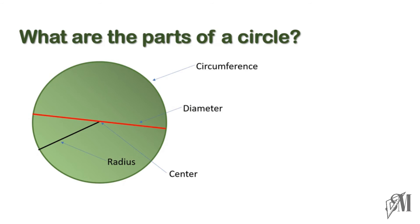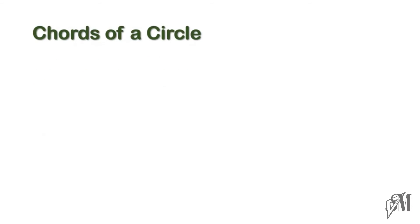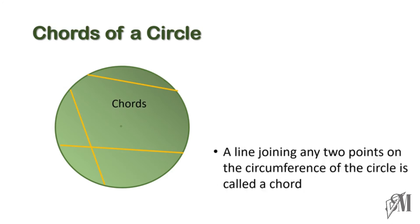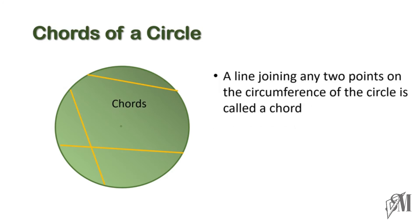In this grade we are going to pay our attention to chords of a circle. What is a chord? These lines are called chords. The specialty of these lines is that the line joining any two points on the circumference of the circle is called a chord. And you have to remember the longest chord of any circle is its diameter.